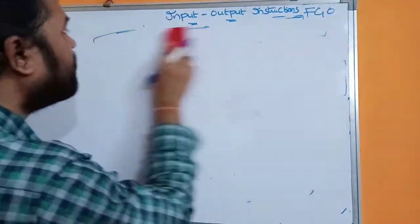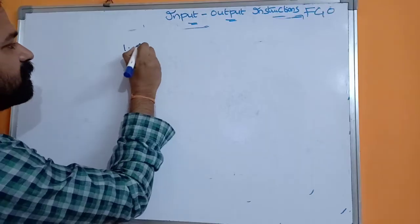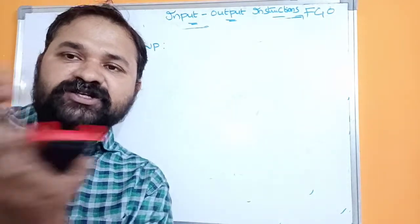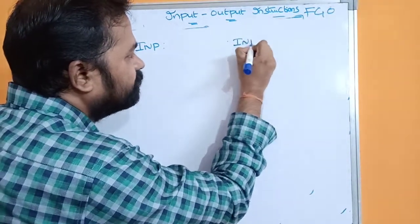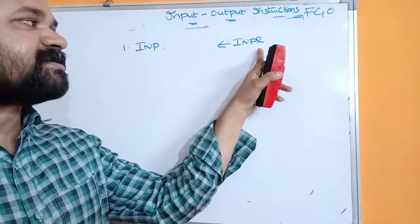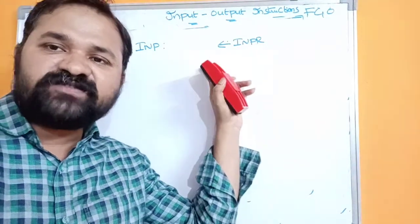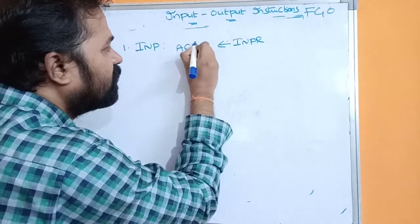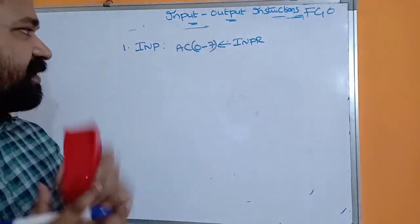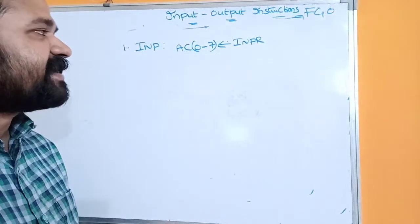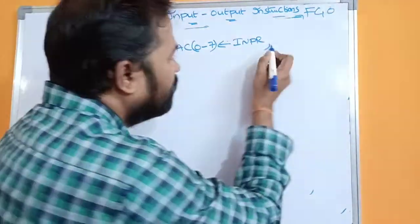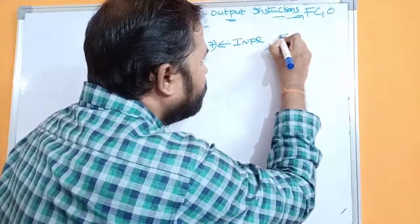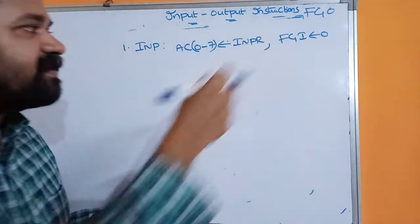The first instruction is INP — INP stands for Input. It inputs a character to the accumulator, transferring contents of the input register to the accumulator. The input register is 8 bits while the accumulator is 16 bits, so data is transferred to the least significant 8 bits (bits 0 to 7) of the accumulator, and the most significant bits (15 to 8) are set to 0. After the transfer, FGI is cleared to 0, indicating the input register no longer contains data.